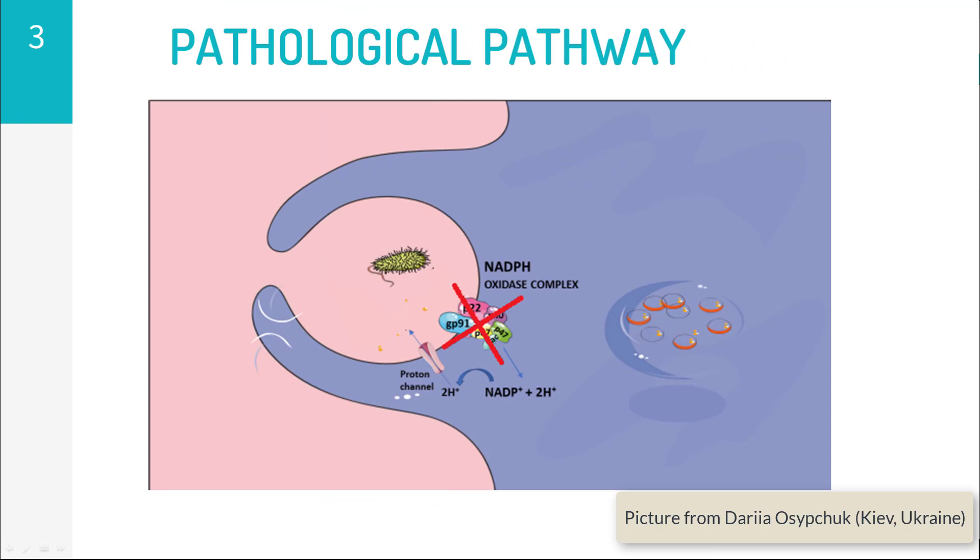Mutations in any one of the subunits of NADPH oxidase complex result in impaired capacity of neutrophils to produce hydrogen peroxide and kill bacteria. These mutations are responsible for the primary immune deficiency known as chronic granulomatous disease, or CGD.